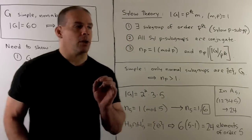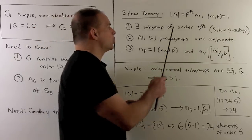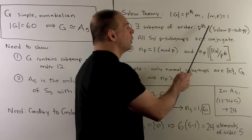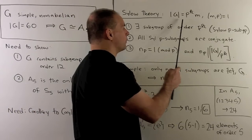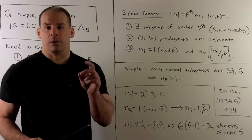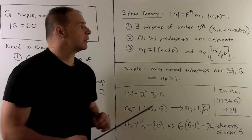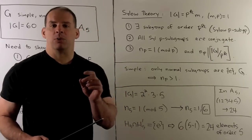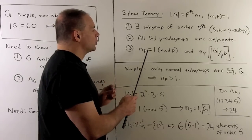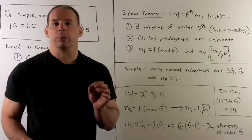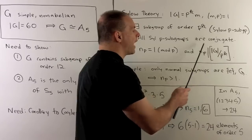For the basics of Sylow theory: we have the order of our group G, a prime P, and we write the order of the group as P to some power K times M, where M and P are relatively prime — so P to the K is the highest power of P dividing the order of G. Sylow theory says there exists a subgroup of order P to the K, called a Sylow P-subgroup. All Sylow P-subgroups are conjugate. The number of Sylow P-subgroups is congruent to 1 mod P, and the number divides the order of the group divided by P to the K.